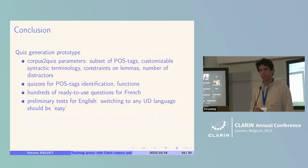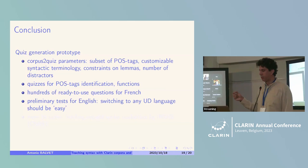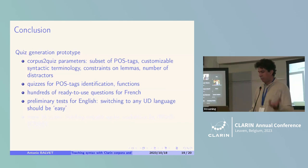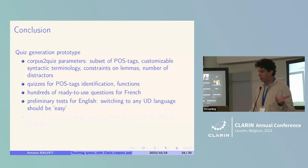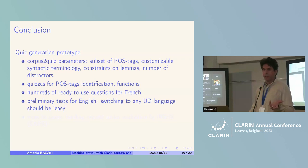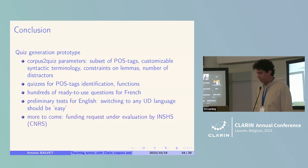In conclusion, I've presented a quiz generation prototype. By setting parameters, you can select subsets of interesting part-of-speech tags or functions, customize how you present syntactic terminology via a mapping table, target specific lemmas or words, and decide how many distractors you want. You can generate quizzes for parts of speech and functions, and use existing questions for French, Spanish, Latin, and English. Preliminary tests show it should be relatively easy to switch to any UD-supported language. There's more to come — thank you for your attention.